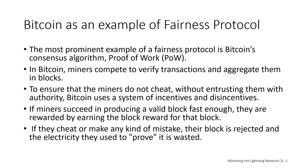In our real-life example, we saw one form of fairness protocol called Split and Choose. That's one of several different fairness protocols that can be built by combining security primitives in different ways, but the basic pattern is always the same: two or more participants interact without trusting each other by engaging in a series of steps that are part of an agreed-upon protocol. Protocol steps arrange incentives and disincentives to ensure that if participants are rational, cheating is counterproductive and fairness is the outcome. Now that you understand this basic pattern, you'll start seeing it everywhere in Bitcoin, the Lightning Network, and other systems.